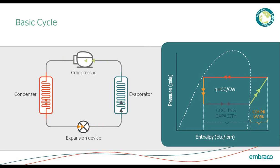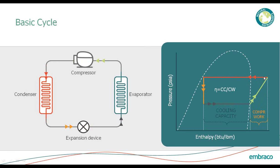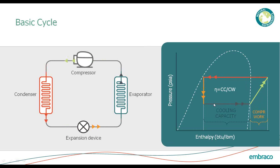This boiling of the liquid in the evaporator is what gives you your cooling capacity. Looking at it on a pH diagram: here's the compressor applying work and raising the pressure, then we enter the condenser — a constant pressure process — and reduce our temperature, then enter the expansion device and drop pressure, then enter the evaporator — again a constant pressure process — where we change phase and eventually raise temperature.